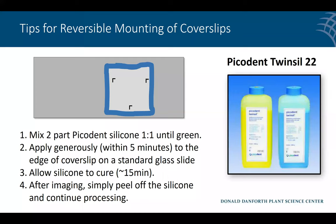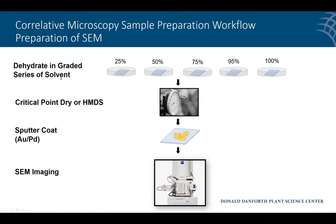Once imaging is done, remove the reversible silicone mount, dehydrate in a graded ethanol series, and use critical point drying. By the way, there are chemicals like HMDS that have a near-equivalent effect to a critical point dryer if one is not available. Then gold coat it and do your SEM imaging. That's the typical correlative workflow: perform your aqueous-based fluorescent imaging first, then process the sample further for EM.